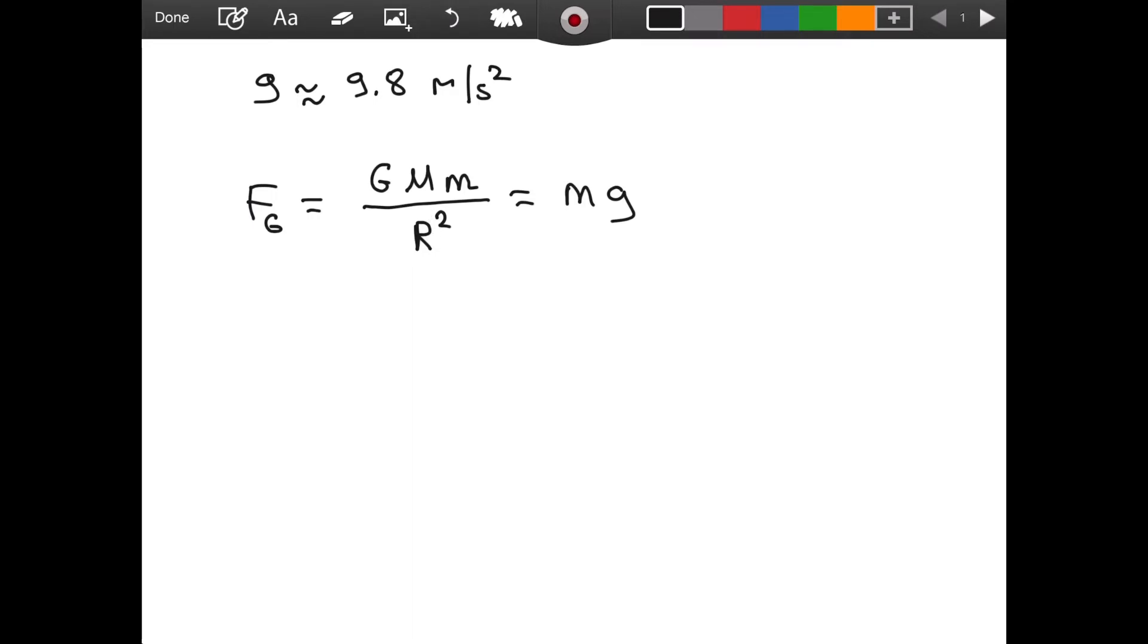So as you can see the factors of m then should cancel. The small case m is who I'm referring to. So this gives us that g is equal to GM divided by R squared.